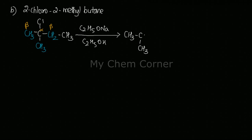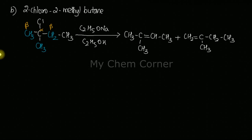From one beta carbon, eliminating a hydrogen and the chlorine forms CH₃–C(CH₃)=CH–CH₃. From the other beta carbon, elimination gives a double bond at the other side: CH₂=C(CH₃)–CH₂–CH₃. Applying Zaitsev's rule: the first beta carbon had three hydrogens, the second had two. Hydrogen is eliminated from the carbon with the least hydrogens, so the second product is the major product and the first is the minor product.